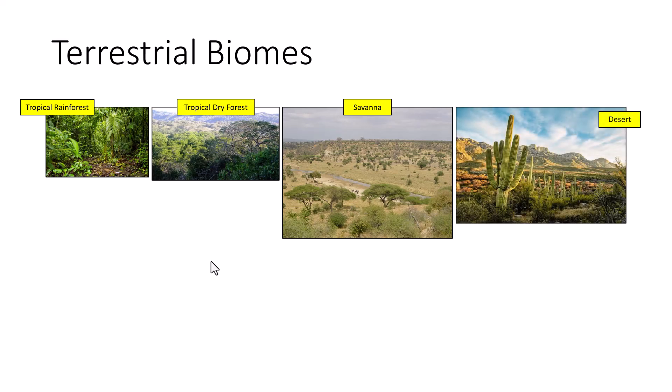Deserts, like the savannah, are arid but even more so — they never receive large amounts of rainfall. They have low precipitation and variable temperatures. Temperatures are high during the day and can drop low at night. Soils are rich in minerals but poor in organic material, meaning lots of sand and very little dirt, giving rise to that arid landscape.